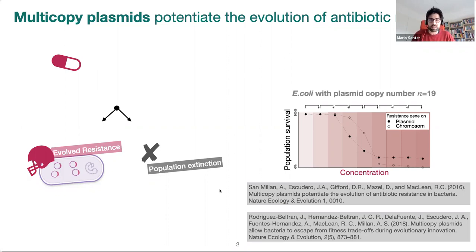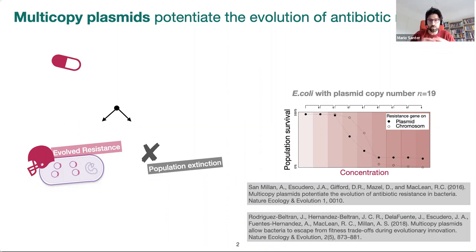There are many reasons why this should be the case. First, there is an increased mutational target for genes on the multicopy plasmid. Second, there are gene dosage effects that can lead to a higher degree of resistance if the resistance gene is on the plasmid. And more generally, there are advantages of possible coexistence of several plasmid variants within a single cell to, for example, escape fitness trade-offs, as shown in a paper by Rodrigo Beltrán and others.